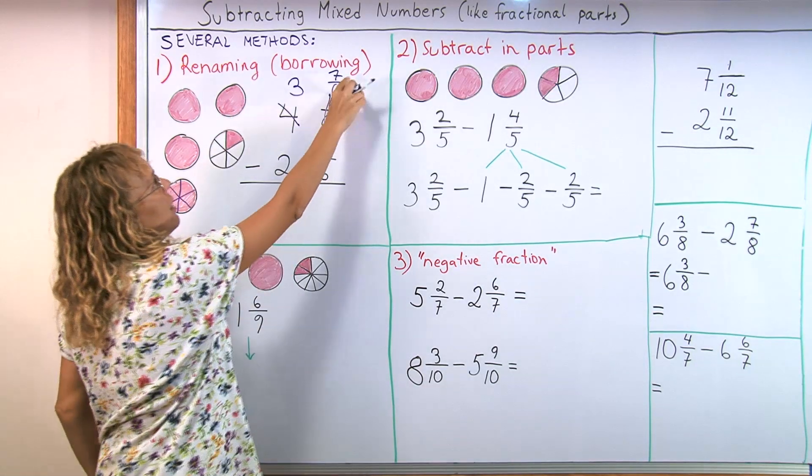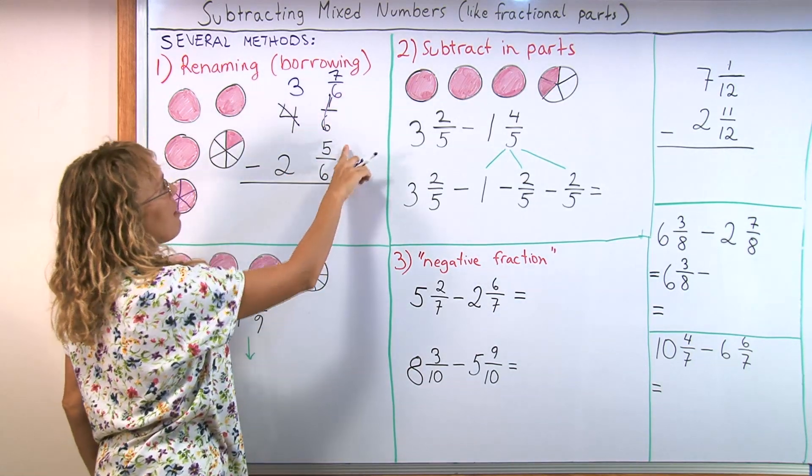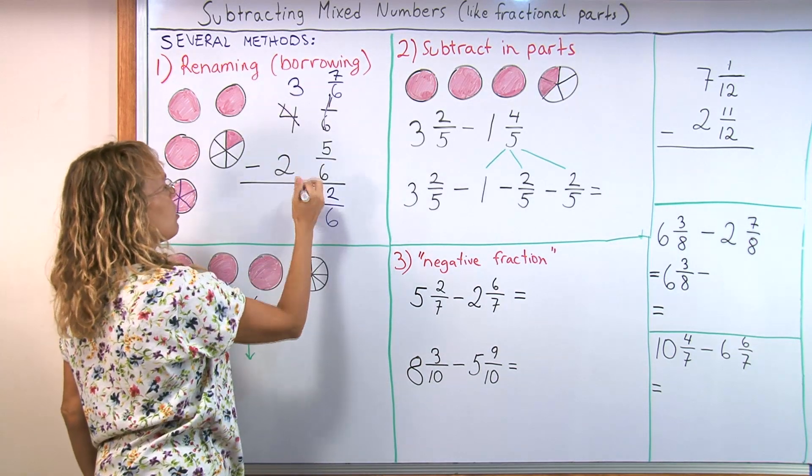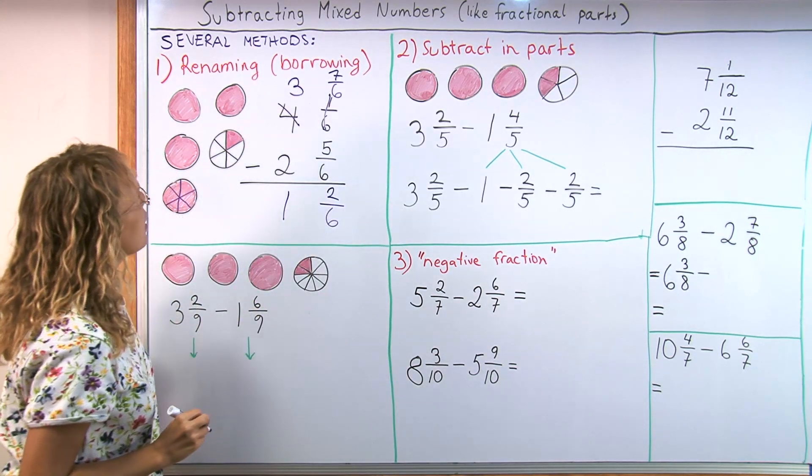So we have renamed our numbers. And now we can subtract. 7/6 minus 5/6 is 2/6. And then 3 minus 2 is 1.